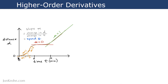The idea here is that the curve is distance over time, and the tangents to the curve — each of these lines — represents speed. Because the slope, m, is equal to change in distance over change in time, which is speed. So that's our first-order derivative of the curve.